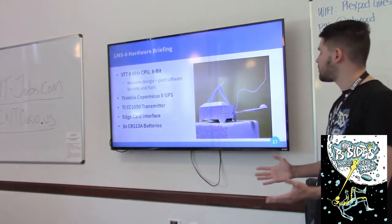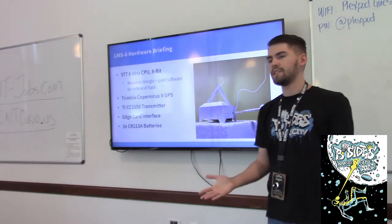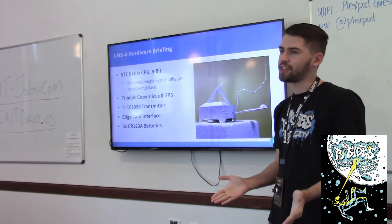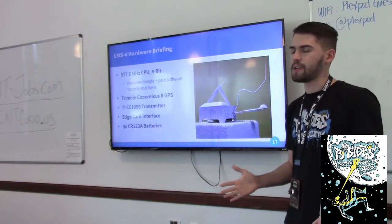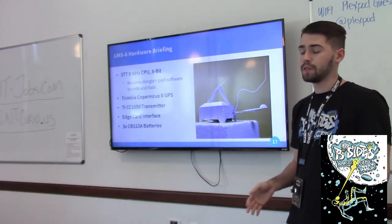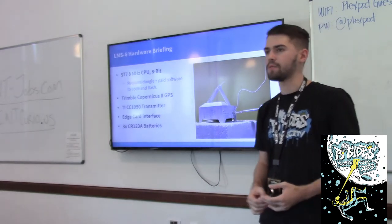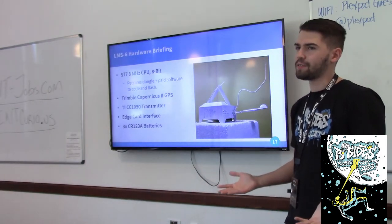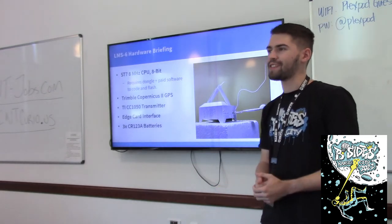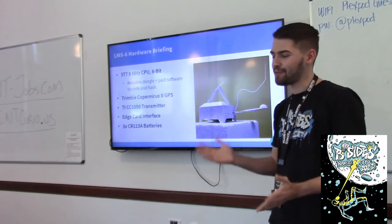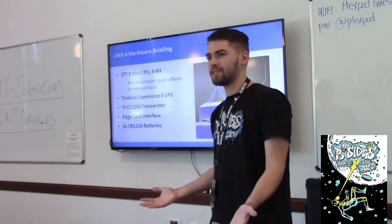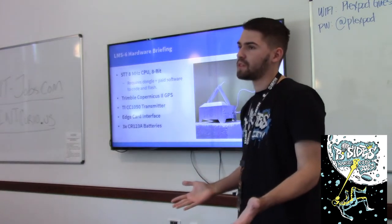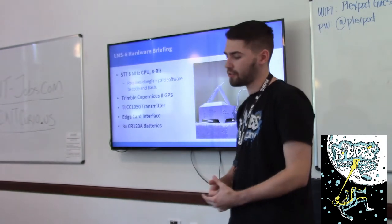This is the Lockheed Martin LMS6 radiosonde. It ran an ST7 8-bit CPU and required a special dongle in order to flash it, which didn't run cheap. It also required special licensed software to develop and write software for it, so we ended up using a virtual machine and had to reset the license every time we wanted to change anything. It has a Texas Instruments UHF transmitter — you might recognize the CC1050, similar to what's used in the Flipper Zero.